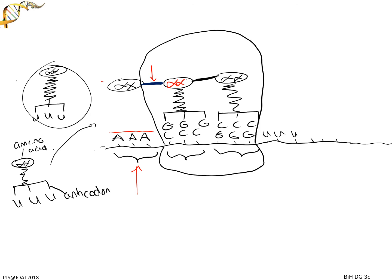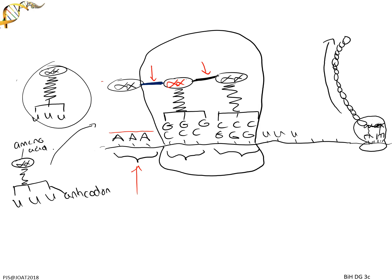This keeps happening - more and more peptide bonds form. At the far end you have tRNAs with amino acids, and one will have loads of amino acids connected, which could be a few, could be dozens, could be hundreds. This polypeptide chain is the start of a protein - though that polypeptide chain is not a fully folded protein yet, you are pretty close at this point.